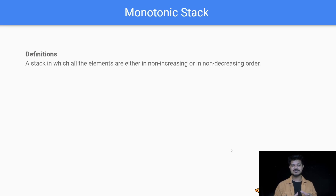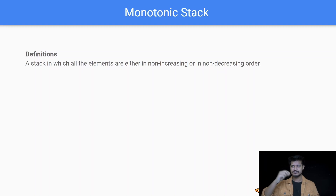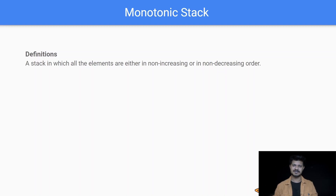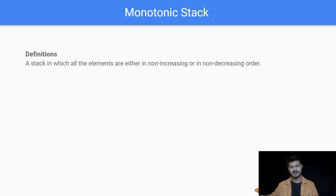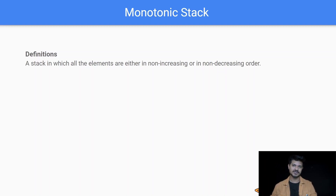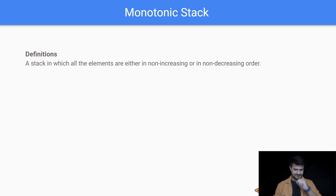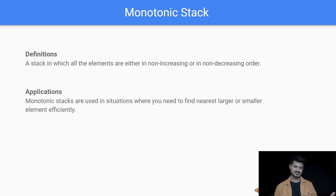So let's start with the definition of what is a monotonic stack. A stack in which all the elements are either in non-increasing or non-decreasing order. Either they are all increasing — at some point they can have some equal elements — or they are all decreasing, again they can have some equal elements. This is called monotonic because they do not change their tone: if they are going up they keep going up, if they are going down they keep going down.